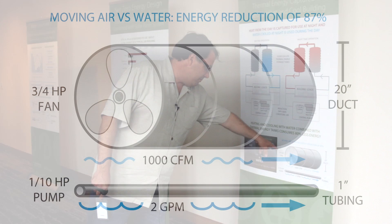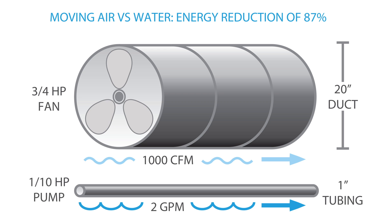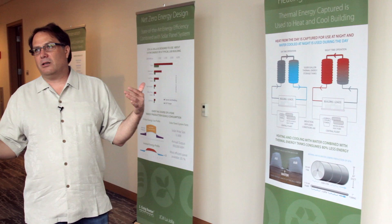That amount of air would require a 20-inch duct with a three-quarter horsepower fan. We can move the same amount of energy through a one-inch tube with only one-tenth horsepower, so it's significantly less energy.